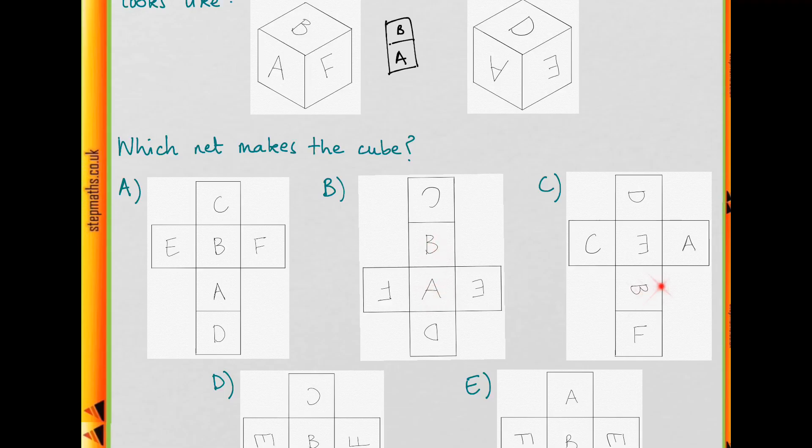But if you imagine folding C up, so this edge would meet this edge, then this A would be on top of the B, so that doesn't match this view that we have, so we can eliminate C.